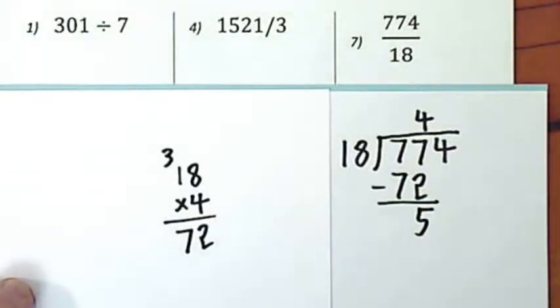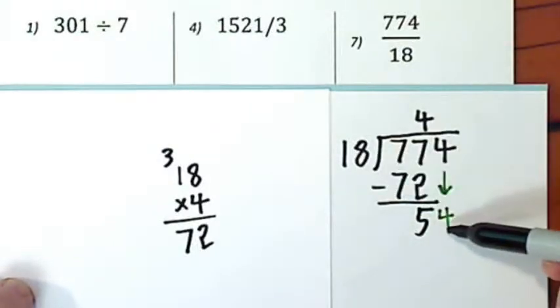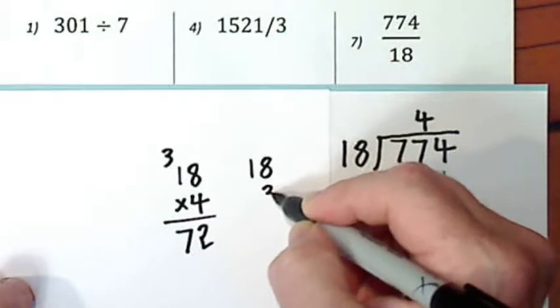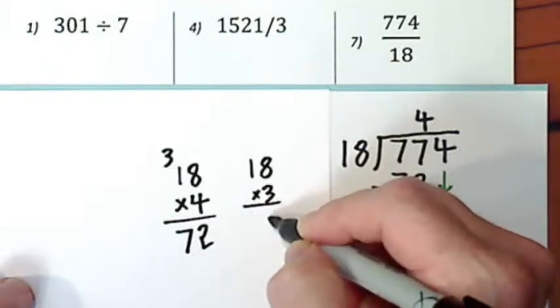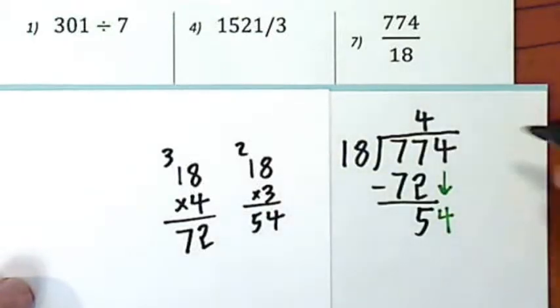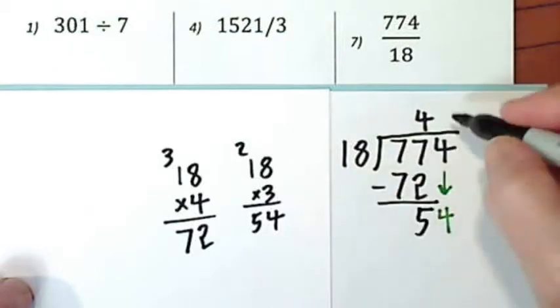Now I bring down the next digit. How many times does eighteen go into fifty-four? Maybe three. Let's try it. Yeah, fifty-four exactly. Alright, so eighteen goes into fifty-four three times.